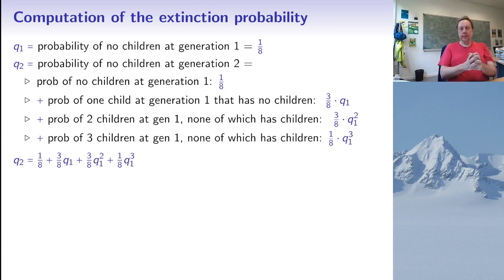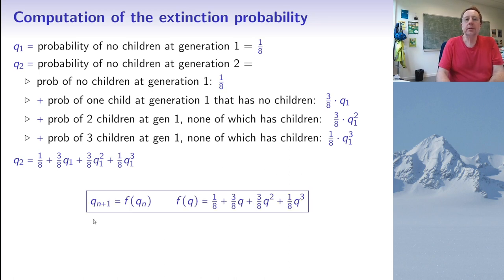And the last possibility is that the ancestor has three children. That gives a probability 1 over 8. And none of these has any children, that gives me a Q1 to the 3. So the conclusion at this step is that Q2, the probability that there are no children at generation 2, is given by this expression, so 1 over 8 plus 3 over 8 Q1 plus 3 over 8 Q1 squared plus 1 over 8 Q1 to the power of 3. But now you see it is quite easy to generalize this because I can express the probability Qn plus 1, that there are no children at generation n plus 1, in a very similar way in terms of Qn, which is the probability that there is no one at generation n.